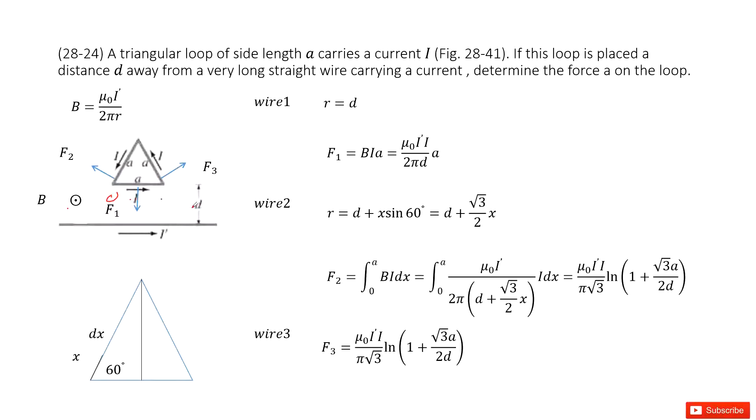Can you determine the direction for the forces at each side? You can use the right-handed rule. This is F1, this is F2, this is F3. We can call this wire1, wire2, and wire3.